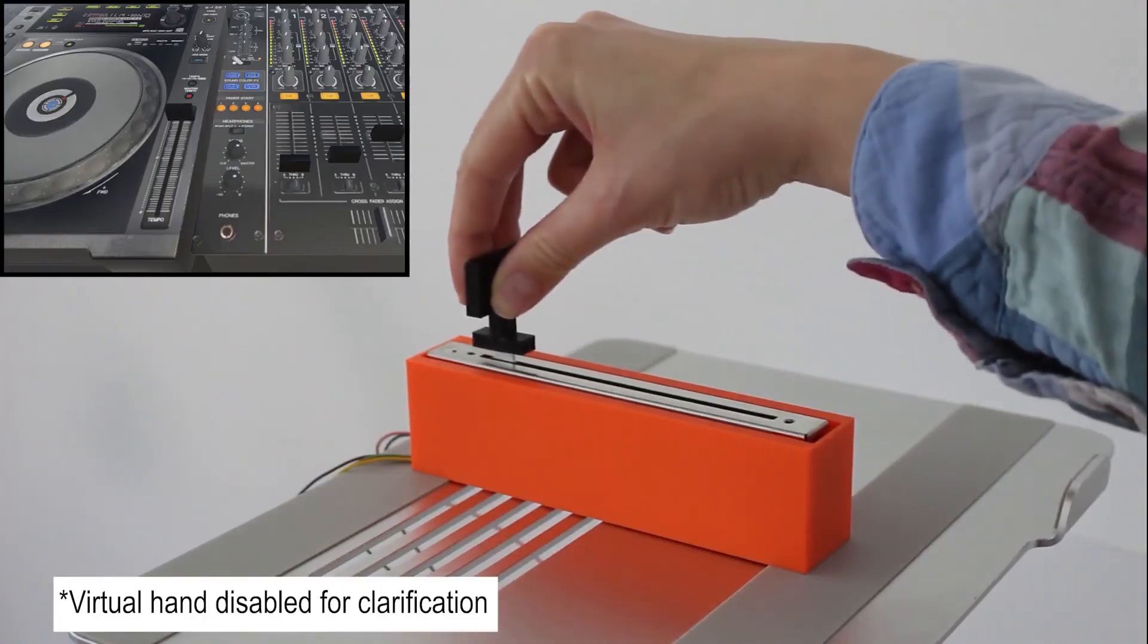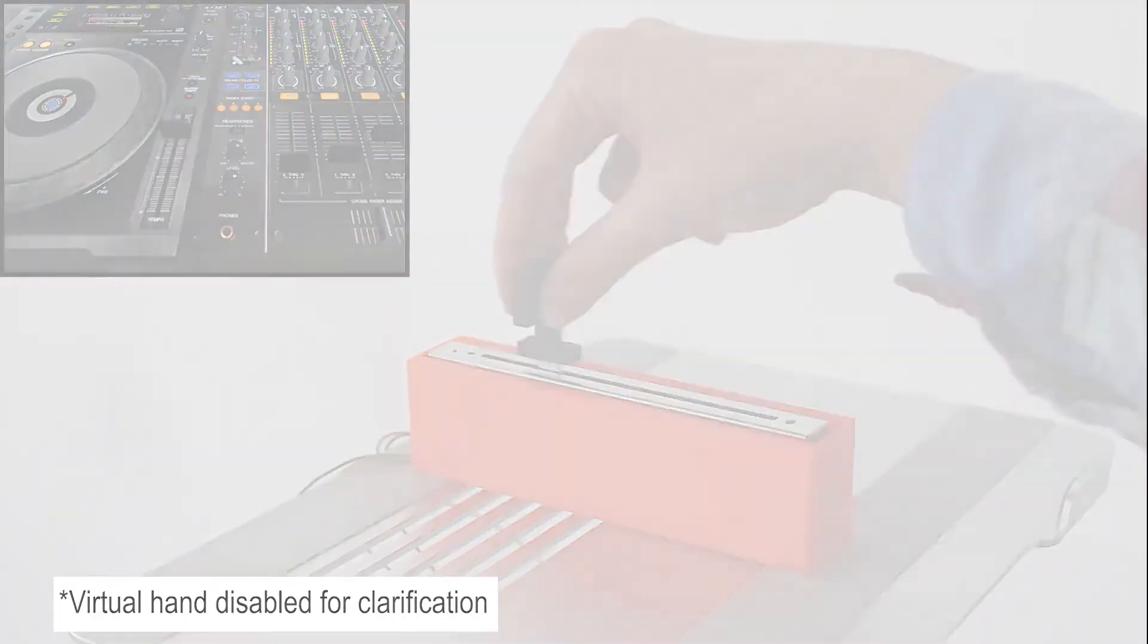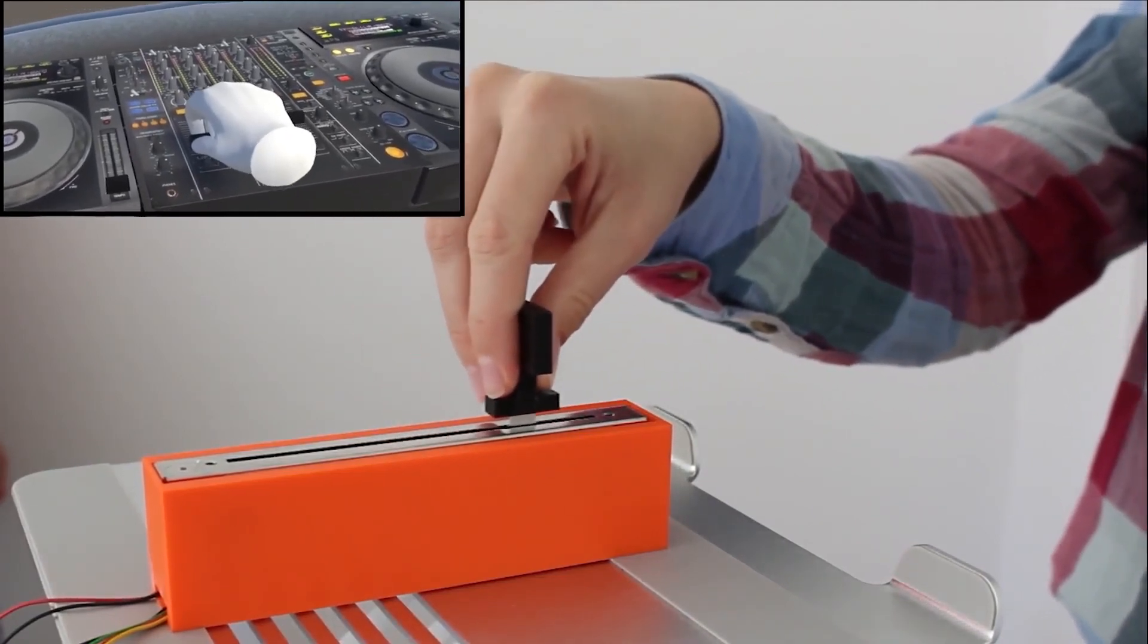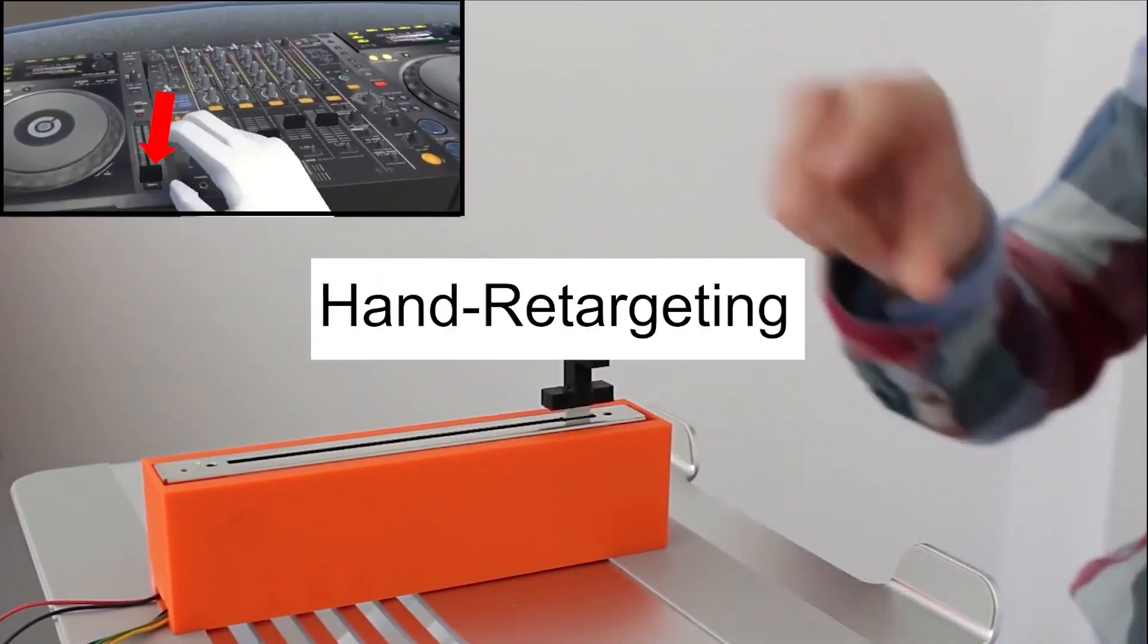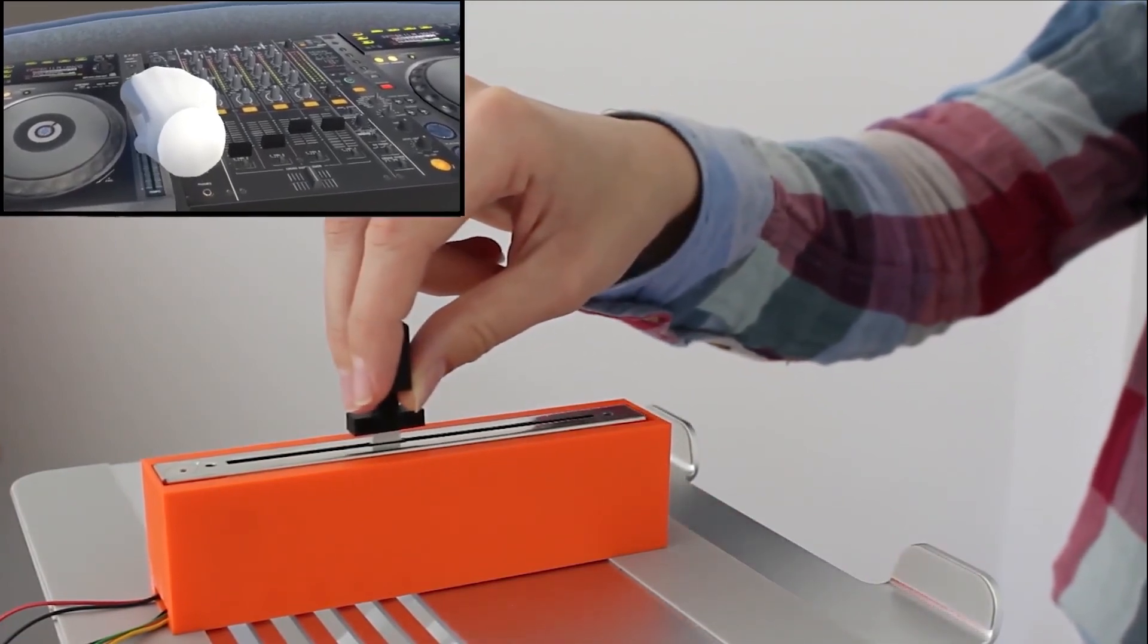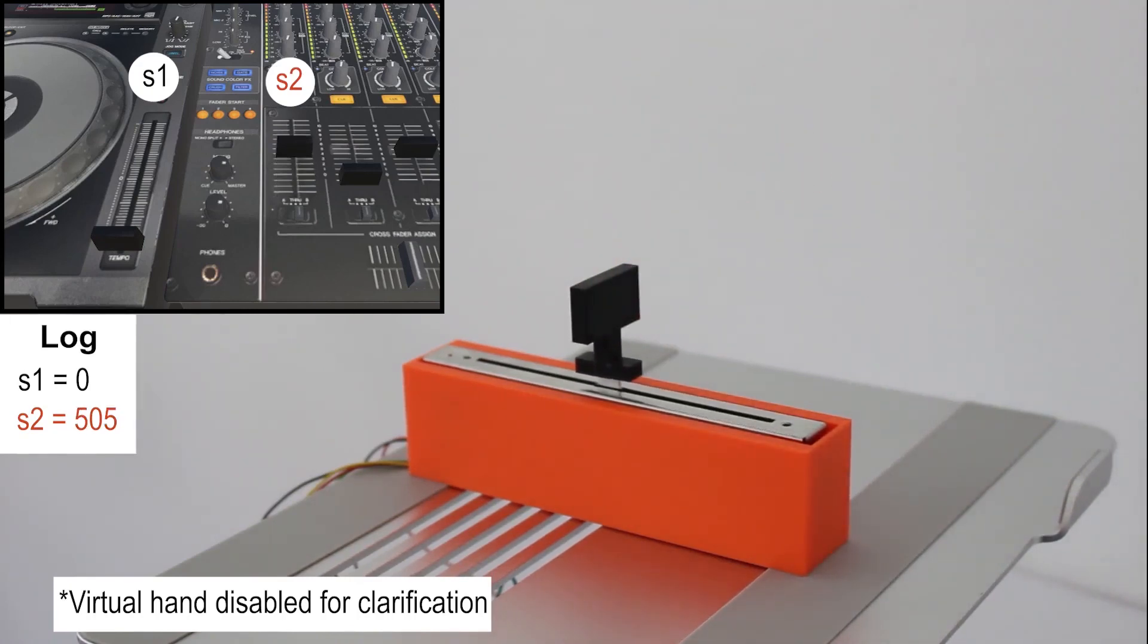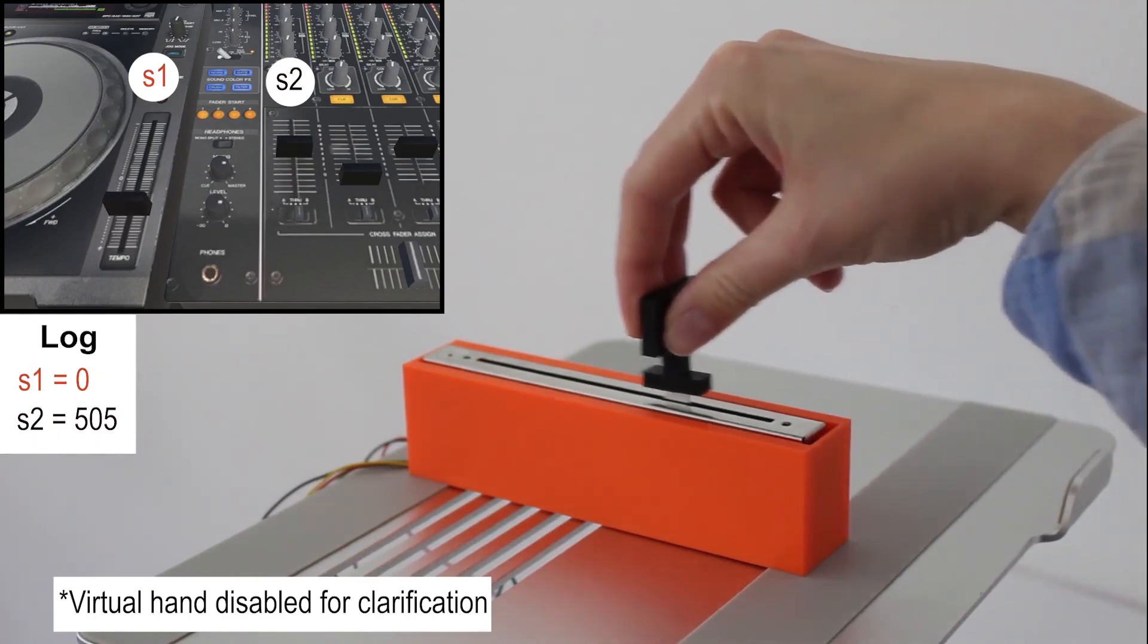Going back to the DJ desk example shown at the beginning, we now build a single physical proxy slider providing realistic haptic feedback for various sliders on the virtual DJ desk. An on-the-fly hand retargeting technique is used to allow the functional proxy to act as a stand-in for multiple virtual sliders of different length on the virtual DJ desk, using the CD ratios determined in our study. To enable a truly multipurpose proxy, we use a position lock alongside a DC motor, allowing the slider to be reset to previous positions of different sliders.